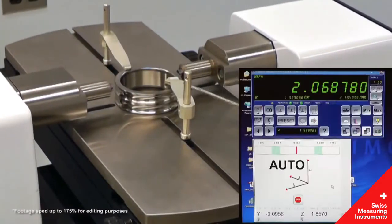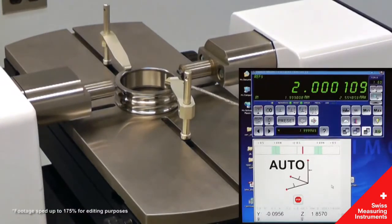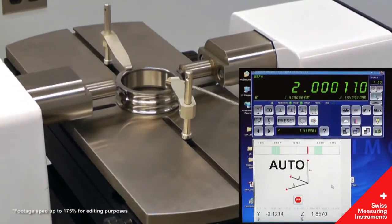For external diameters, a preload is first applied. The part is then swept in the Y direction to find the reversal point.